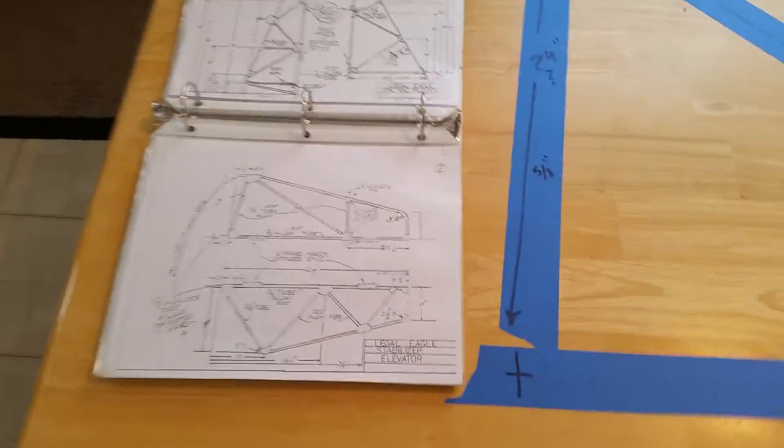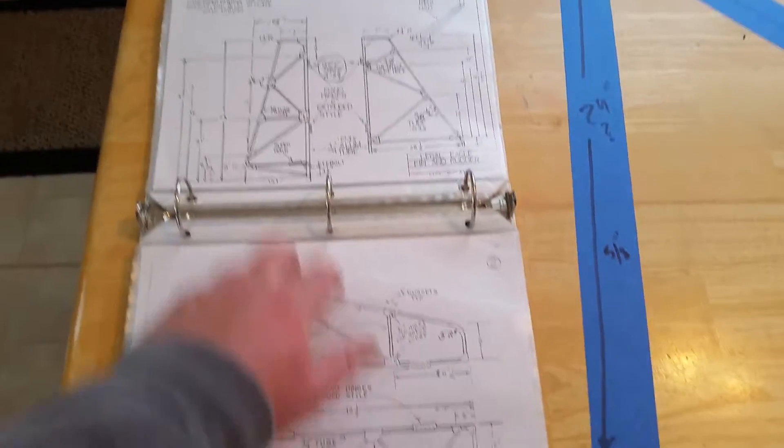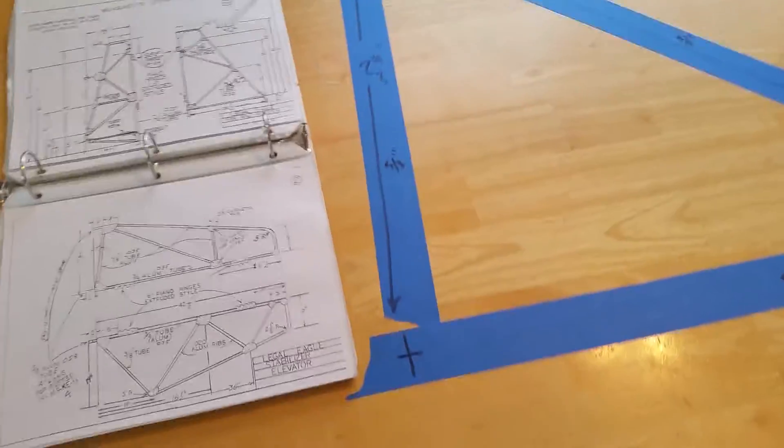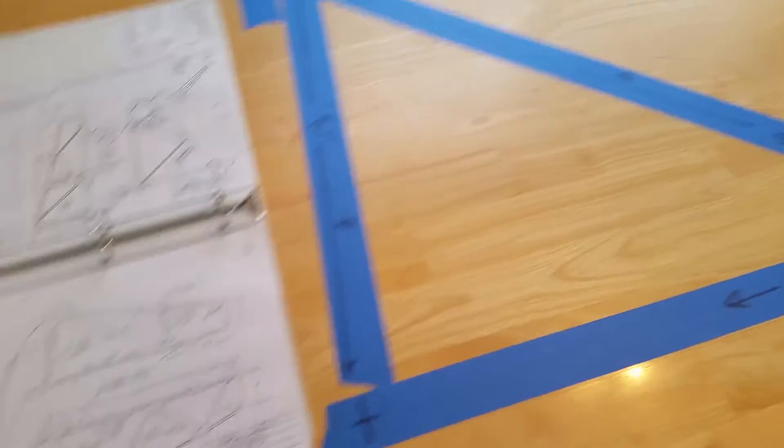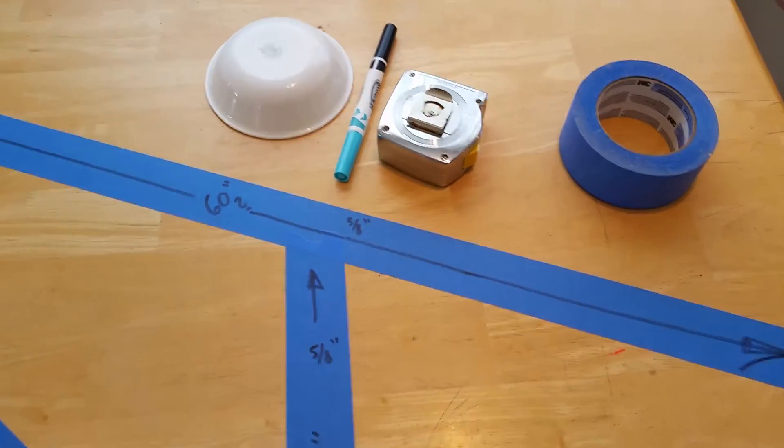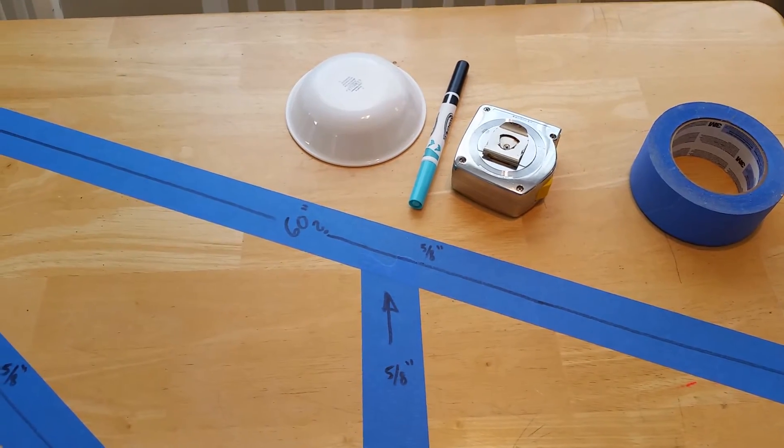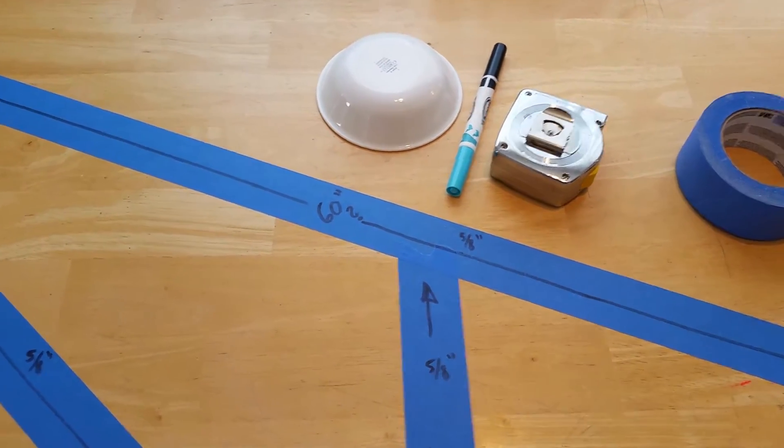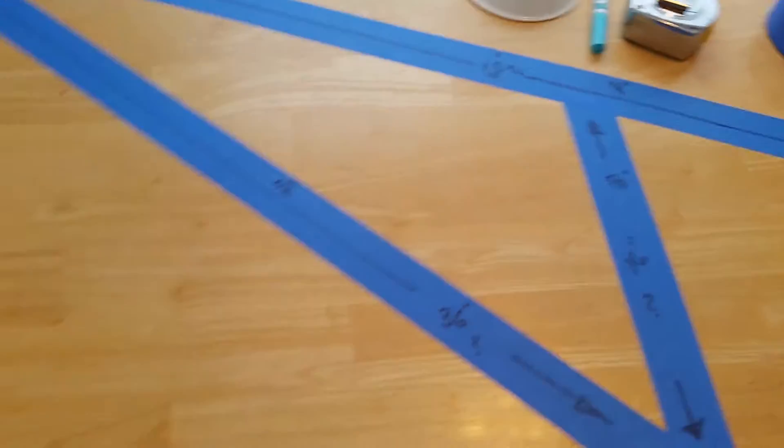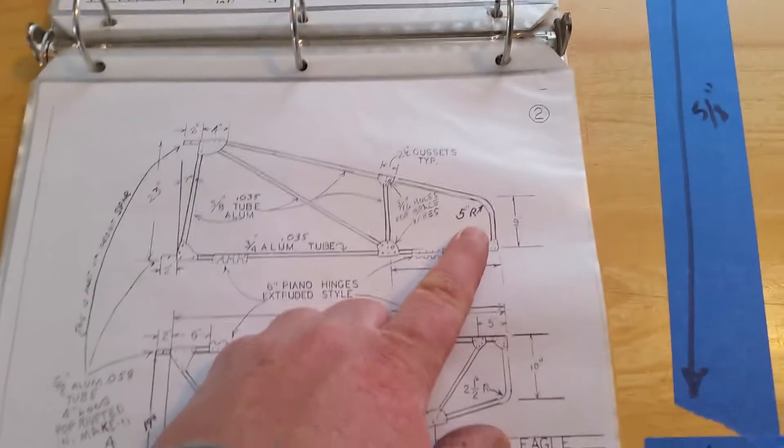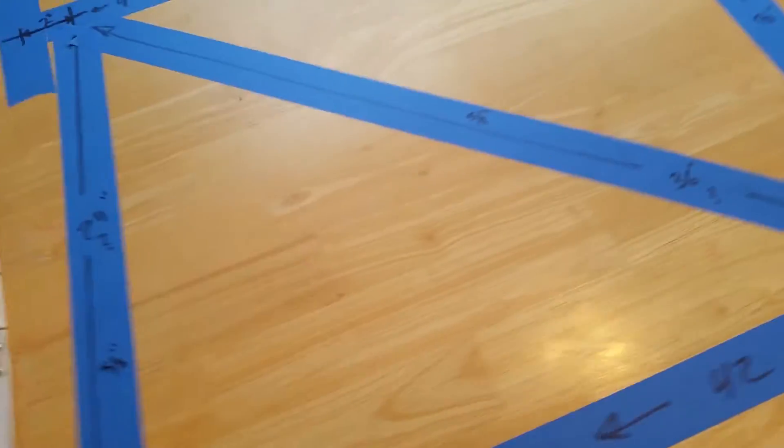What I did, and I'm gonna do this for every single part in the tail, is I took my kitchen table and I took some painter's tape. We got a tape measure, marker from the kids that I stole, and a bowl here that's gonna represent that five inch radius. It's like five and a half, it's close enough.